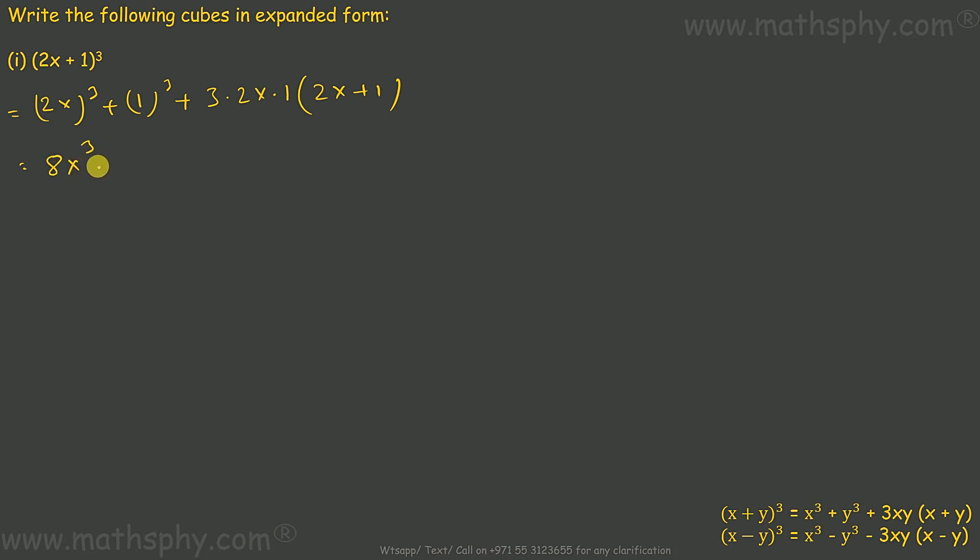Now this will be 8x cube plus 1 plus 6x times 2x plus 1. Further, 8x cube plus 1 plus 6x into 2x gives 12x square, plus 6x into 1 gives 6x. So if I rearrange it starting with cube numbers and quadratic, then linear, and then constant, this comes to 8x cube plus 12x square plus 6x plus 1.